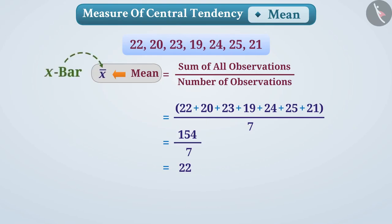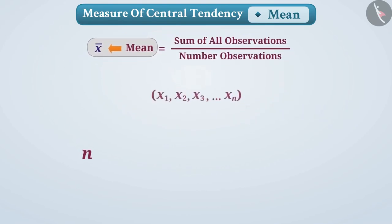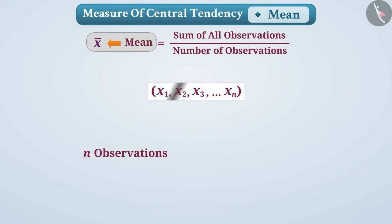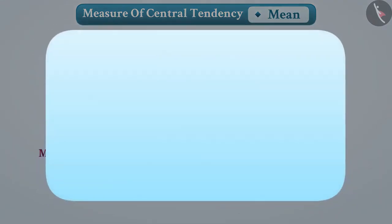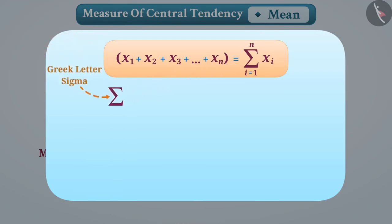If we are given n observations like this, then their mean can be written as shown. For our convenience, we can represent the sum of observations in this way, where the Greek letter Sigma denotes summation.